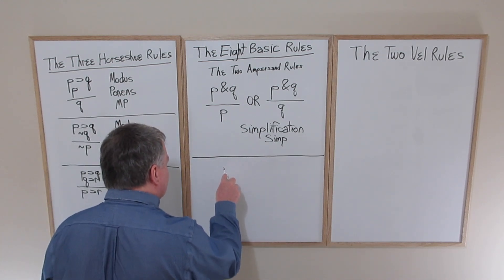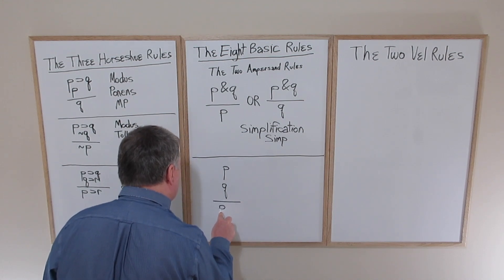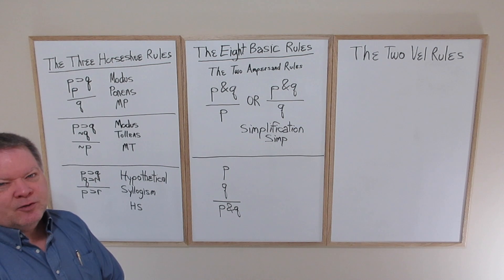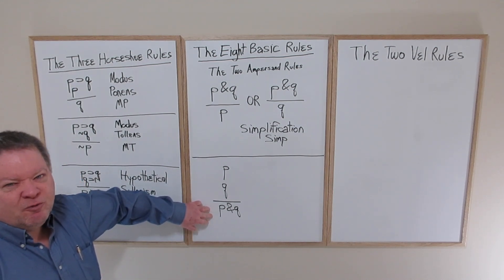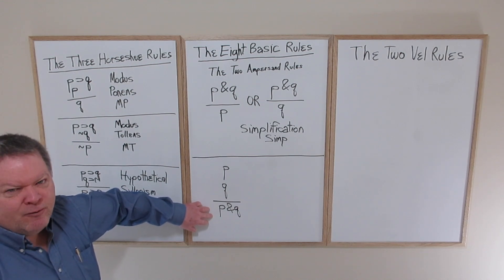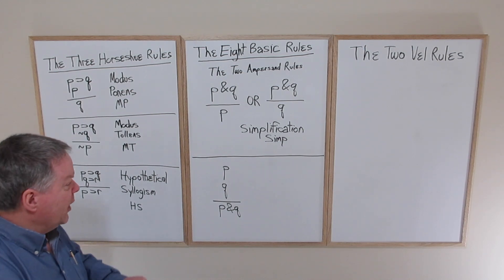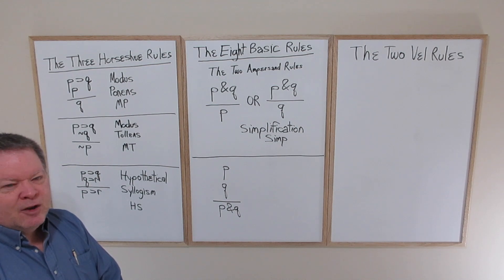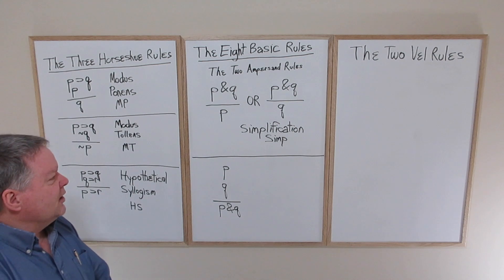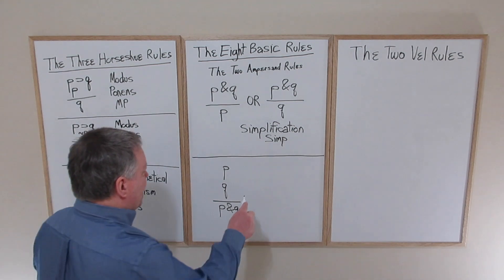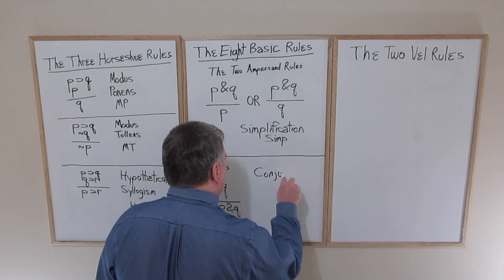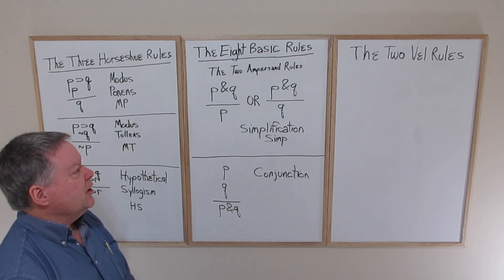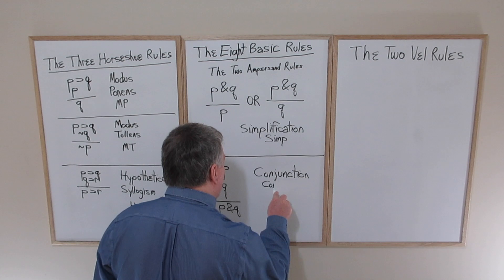The second ampersand rule: starting with any two sentences P and Q, we can always validly infer a conjunction of them. If these two sentences are true, how could their conjunction not also be true? This is called conjunction — abbreviated CONJ — because we are taking two sentences and joining them into a conjunction. So that's modus ponens, modus tollens, hypothetical syllogism, simplification, and conjunction — five of the eight basic rules.